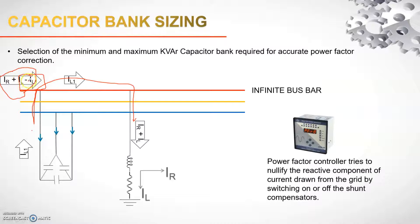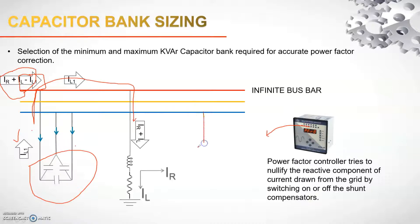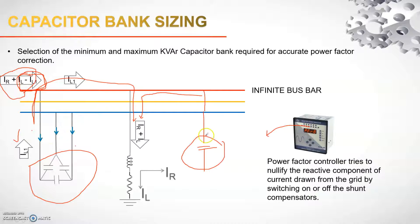To achieve 100% reactive power compensation, I want this reactive component to be zero. If one capacitor bank cannot provide the required current, the power factor manager through another channel will connect another capacitor bank. More capacitor banks will be turned on until this current value ideally equals zero.